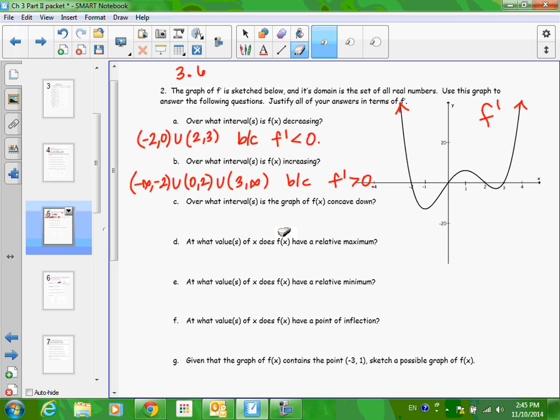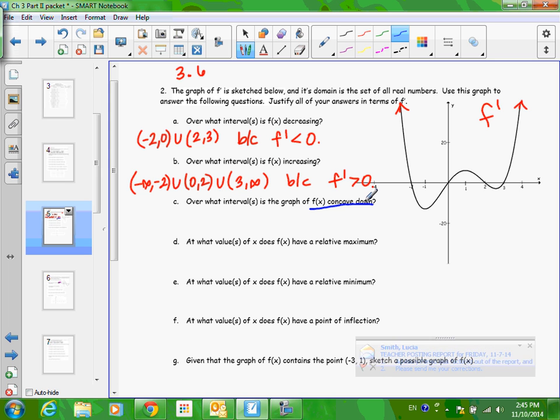So, we would want to start this then at negative infinity. We would want to stop it at negative 2, union 0 to 2, union, I'm going to have to erase this and rewrite. Because I didn't leave myself room for it. So, union 3 to infinity. Over what interval is the graph of f(x) concave down? What do we know about f being concave down? What's our main justification?